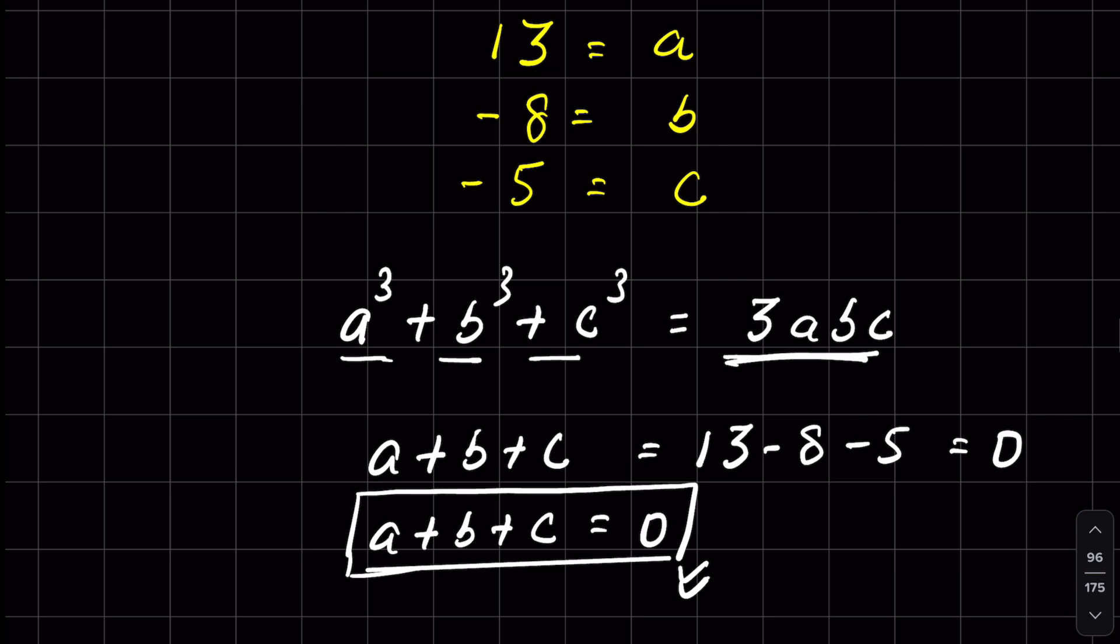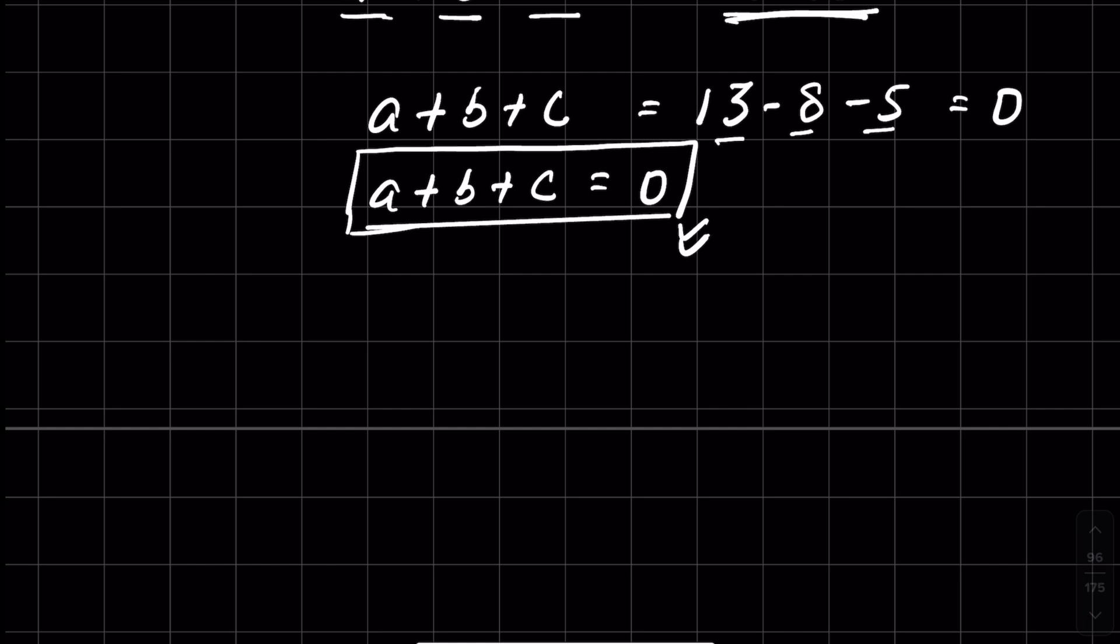So here we can see that 13 - 8 - 5 = 0. That means a³ + b³ + c³ we can write as 3abc, or 13³ + (-8)³ +